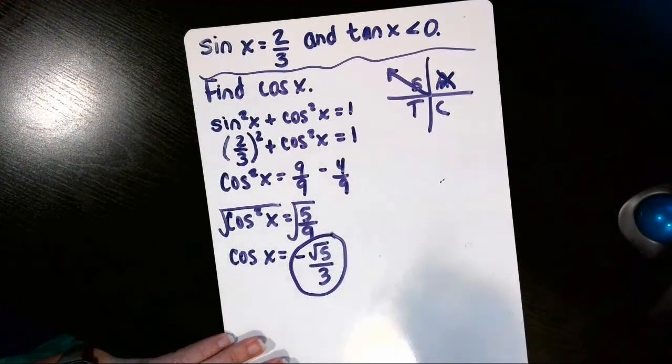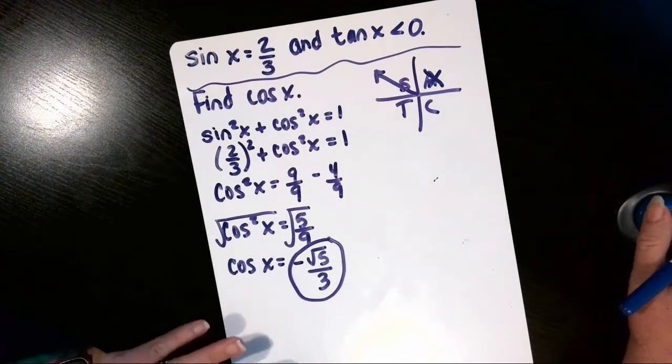And then our answer is cosine of x equals negative square root of five over three.